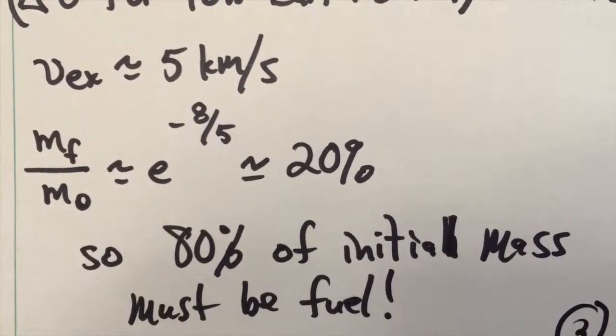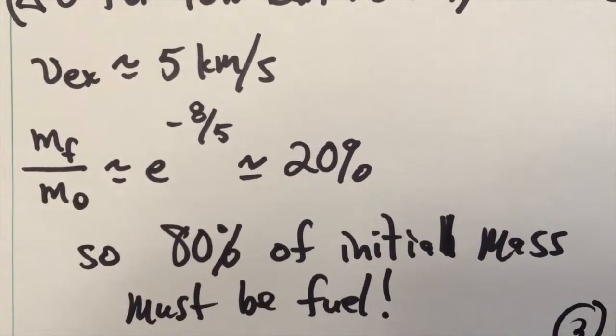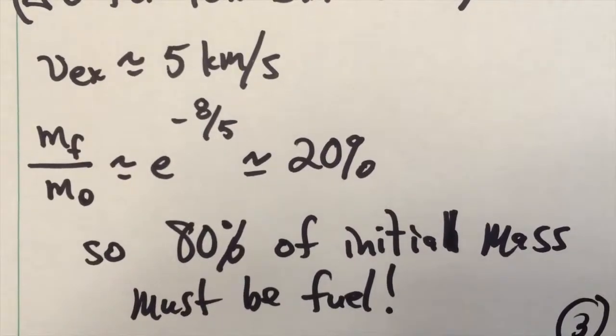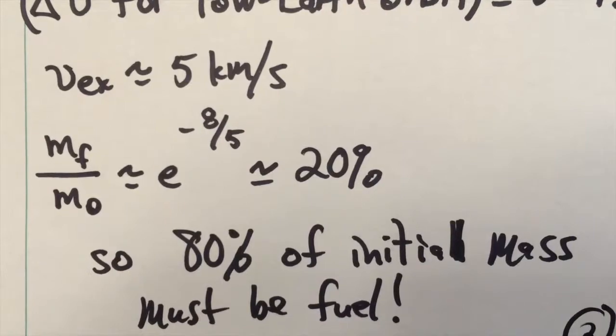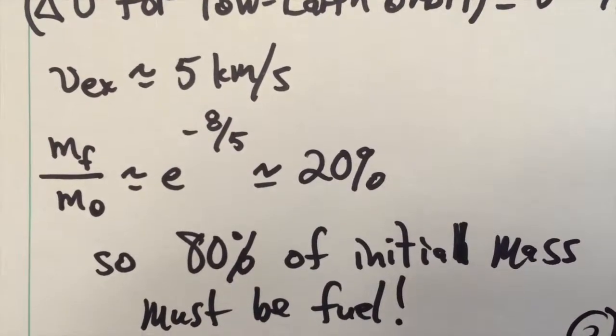This is called the tyranny of the rocket equation. In order to put something into even a significant orbit, you require an enormous amount of material to be exhausted.